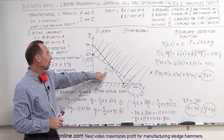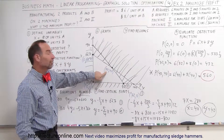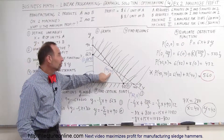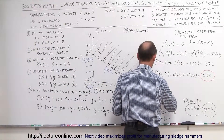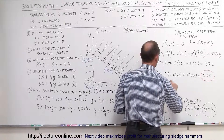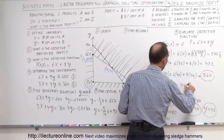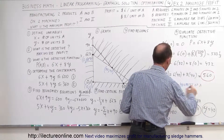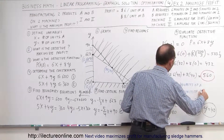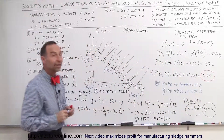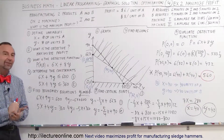That maximum profit is obtained by operating at this particular point in the region of interest. Step ten — the solution: X = 40 and Y = 40, meaning we want to make 40 units of A and 40 units of B. That gives the maximum profit of $560 per day under the given constraints. And that's how we solve a linear programming problem like this.